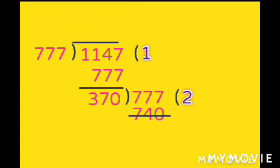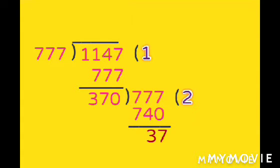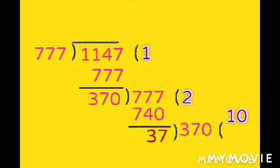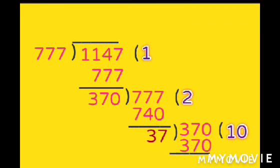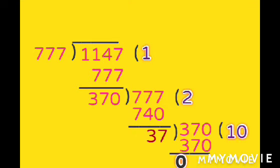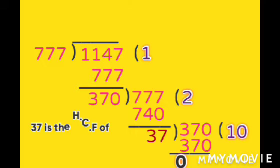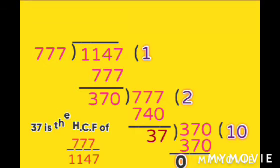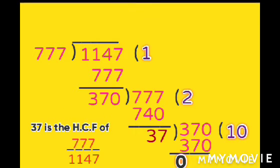Put 777 inside the two lines. 370 into 2 is 740. Subtract 740 from 777 to get 37. Then subtract 370 from 370, which gives 0. So 37 is the HCF of 777 and 1147.